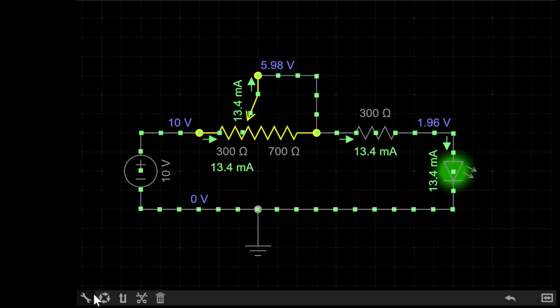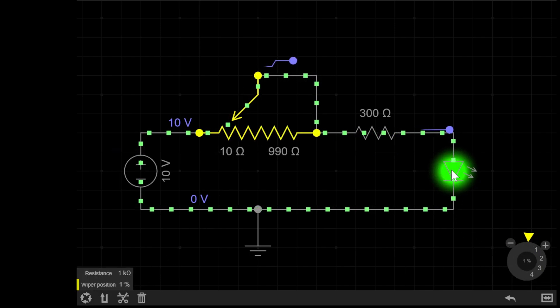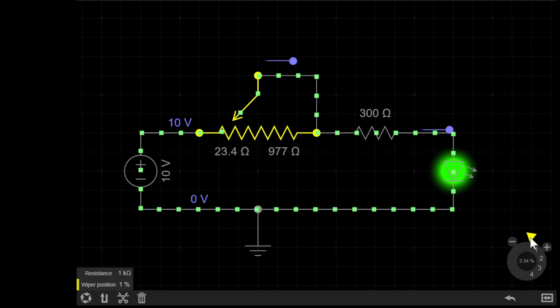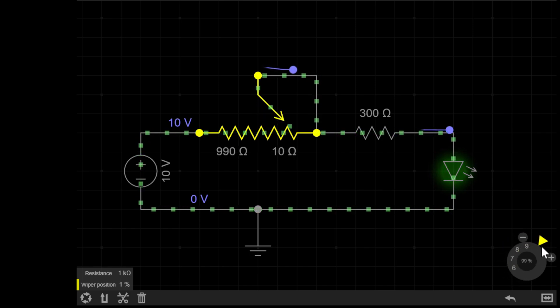So if I now simulate the circuit, if I take this pot all the way down to its lowest value, you can see the LED is now very bright, 300 ohms, at over 20 milliamps current, so it's happy as bright as it can be. But then if I increase the value of the pot gradually up, you'll see the LED gets dimmer and dimmer and dimmer until it almost goes out.